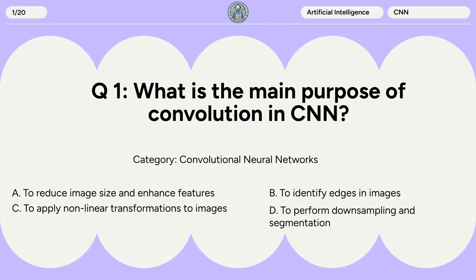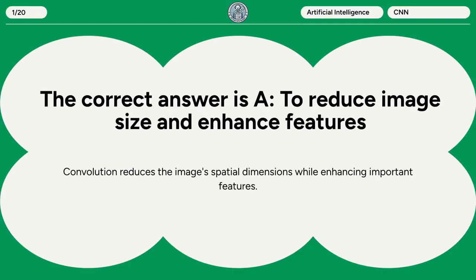Question 1. What is the main purpose of convolution in CNN? A. To reduce image size and enhance features. B. To identify edges and images. C. To apply nonlinear transformations to images. D. To perform downsampling and segmentation. The correct answer is A: to reduce image size and enhance features. Convolution reduces the image's spatial dimensions while enhancing important features.